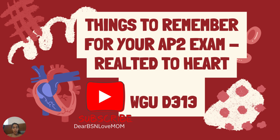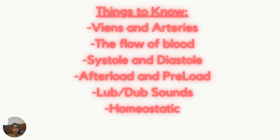Here are some things to go over and remember for your AP2 exam and your OEA related to the heart. These are some things you're going to want to know and get really down pat: your veins and arteries, the flow of blood, systole and diastole, preload, afterload, and hemostatics. You're going to want to do some research on all of that and make sure you have it all down.